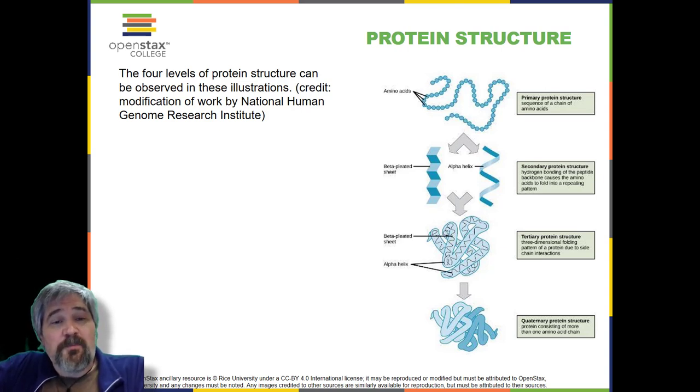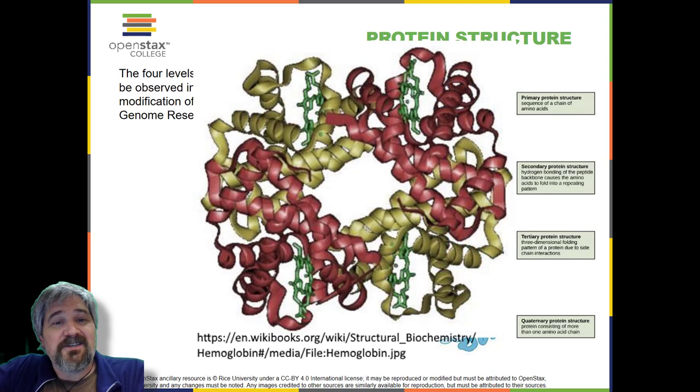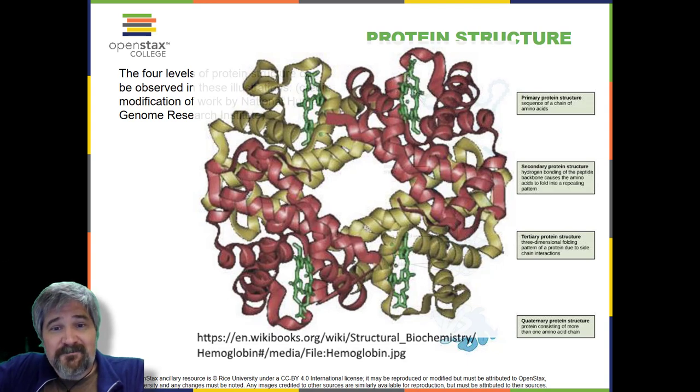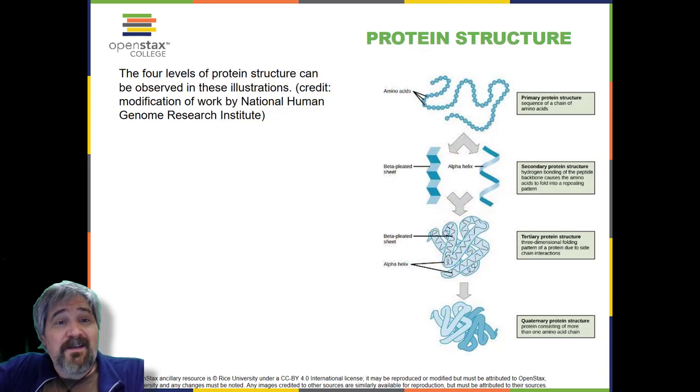In nature, some proteins are formed from several polypeptides, also known as subunits, and the interactions of these subunits form the quaternary structure. Weak interactions between the subunits help to stabilize the overall structure. For example, hemoglobin is a combination of four polypeptide subunits. Each protein has its own unique sequence and shape held together by chemical interactions. If the protein is subject to changes in temperature, pH, or exposure to chemicals, the protein structure may change, losing its shape in what is known as denaturation, as discussed earlier.